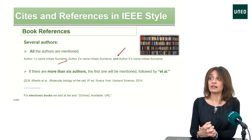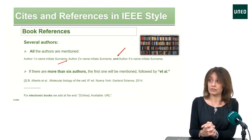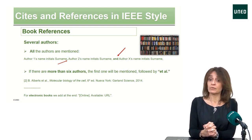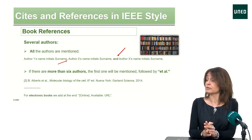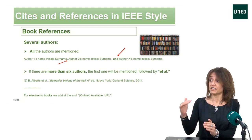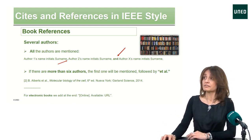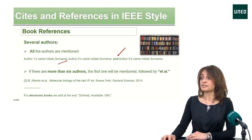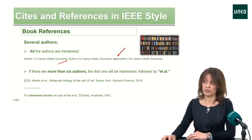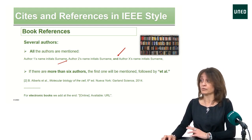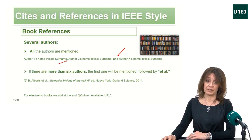If there are several authors, all the authors are mentioned, separated by commas, and the last one is mentioned with an 'and.' But if there are more than six authors, the first one will be mentioned and then followed by 'et al.,' like in the example. If we are making references for electronic books, we add at the end 'online' in square brackets and we give the URL where it is available.